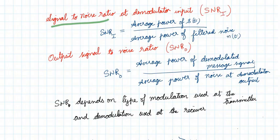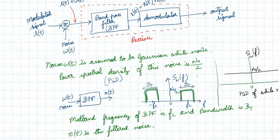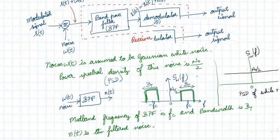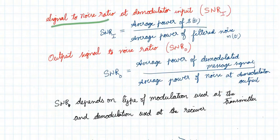There is another measure: the output signal-to-noise ratio, SNR_O. This is the signal-to-noise ratio at the output of the demodulator — average power of the demodulated message signal divided by the average power of the noise at the demodulator output. After demodulation, there will still be some noise at the output. SNR_O depends on the type of modulation used at the transmitter and the demodulation used at the receiver.